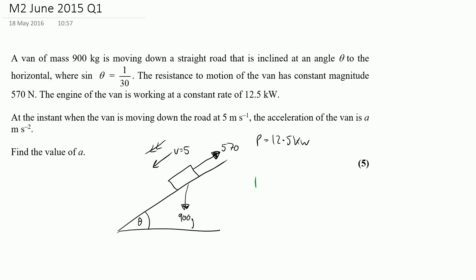Now one of the things that I know is that power is equal to force times by velocity. So I can write this as 12.5. Now that's kilowatts so that's 10 to the power of 3 and that's force times by the velocity which is 5. So dividing by 5 I've got here 2500 is equal to F.